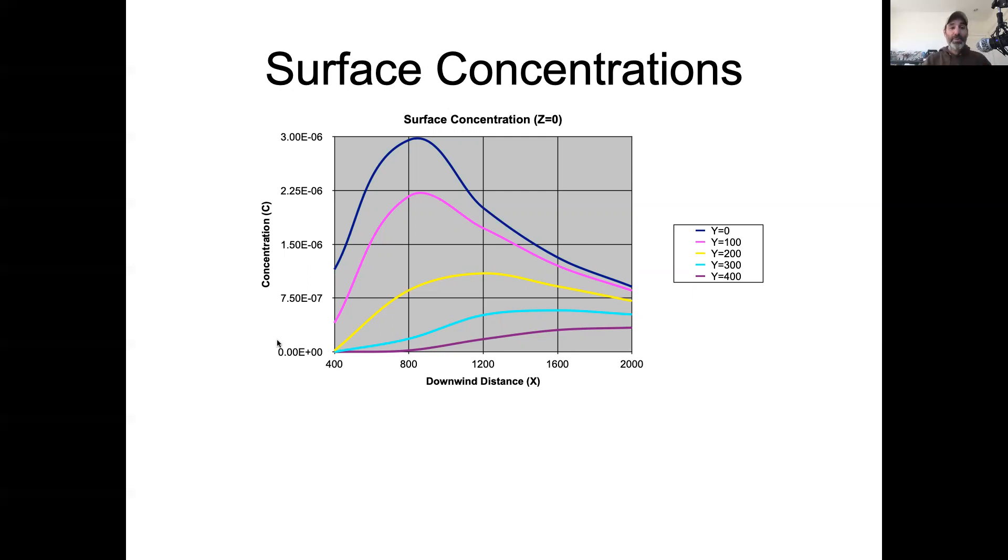It takes on this shape because at distance zero, we actually don't see very much pollution at the ground because the pollution is all up at the effective stack height. And so what we see is as we move downwind, the amount of pollution actually initially goes up. That's because we have this initial diffusion of the pollutant from the stack height down to the ground. And then it reaches some maximum at some distance, and then it's going to decline after that as the pollutant disperses away.